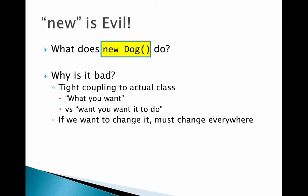The other big problem is if we ever want to change it. Let's say instead of creating a new Dog, we want to create a new Cat. We've got to go to every spot where it says `new Dog` and make a change. Sometimes you might miss — if you don't have all your code checked out in your IDE, you know, that might not work. So you might miss something, and that can create a big problem.